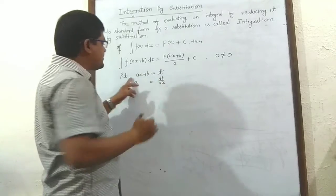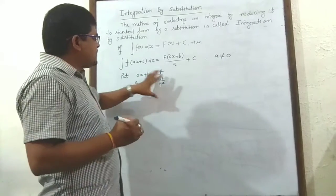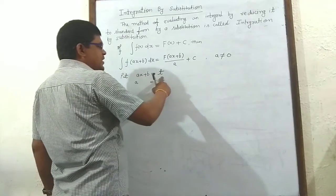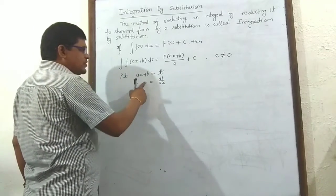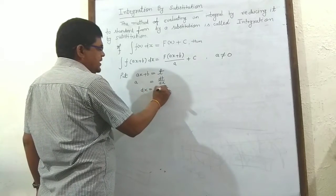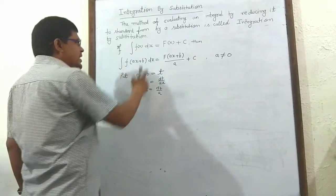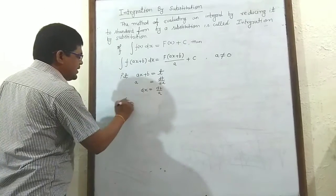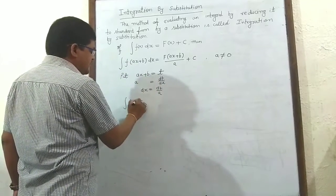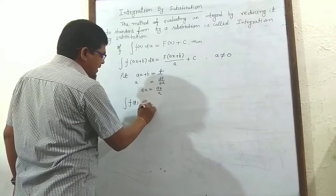We are differentiating this with respect to x. Differentiating above with respect to x, we get dt upon dx. By cross multiplication, dx equals dt upon a. Now substitute this value. We get f(ax + b) equal to t, and dx equal to dt upon a.